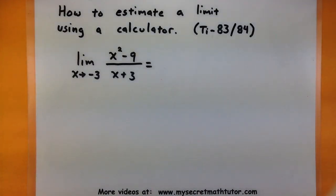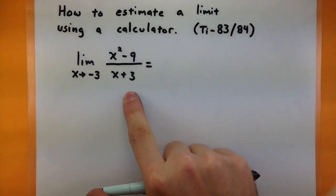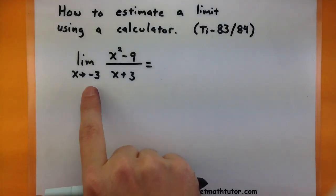So the problem I'm looking at is I want to figure out the limit of my function, x squared minus 9 all over x plus 3, as I choose x values closer to negative 3.